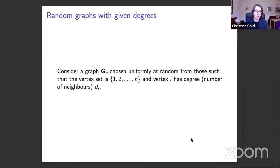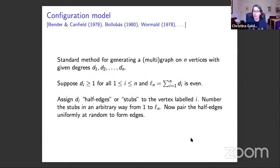The basic model to consider is that of a random graph with given degrees. We think about a graph G_n chosen uniformly at random from those whose vertices are labeled by the numbers one up to n, and vertex i has degree given by some quantity D. There's a standard method for generating a multigraph on n vertices with given degrees, called the configuration model, due to ideas from Bender and Canfield, Bollobás and others.